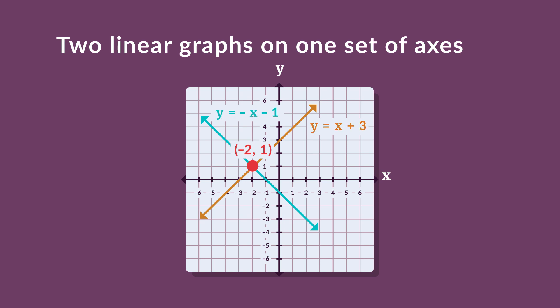Here we see that the point negative 2, 1, is the point solution to both of these linear equations.